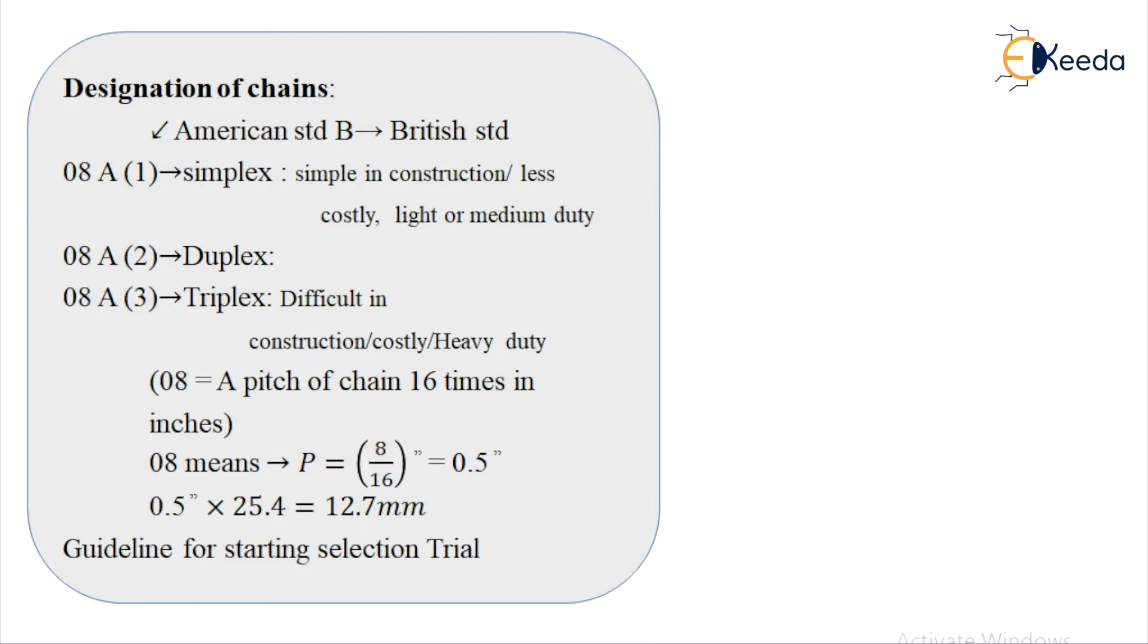As shown in the slide, you can see the number 08A1 represents a simplex series. In this case, the number 1 which is suffixed after letter A represents simplex chain. 2 for duplex chain and 3 for triplex chain. So 08A1 represents simplex chain which is simple in construction, less costly, and can be used for light or medium duty purposes. Whereas 08A3 represents triplex chain which is difficult in construction, costly, and can be used for heavy duty applications.